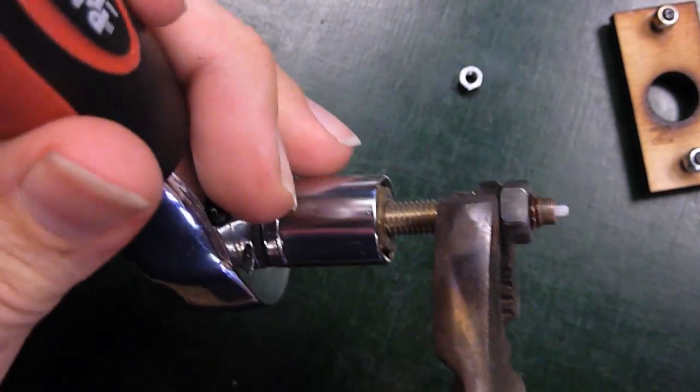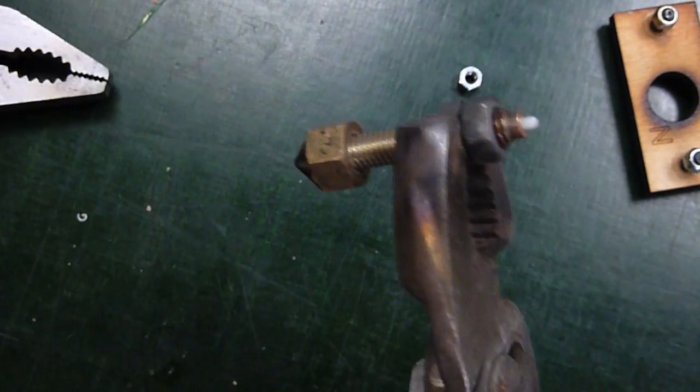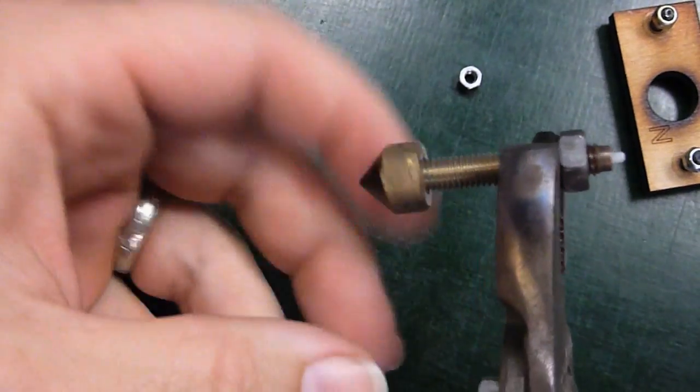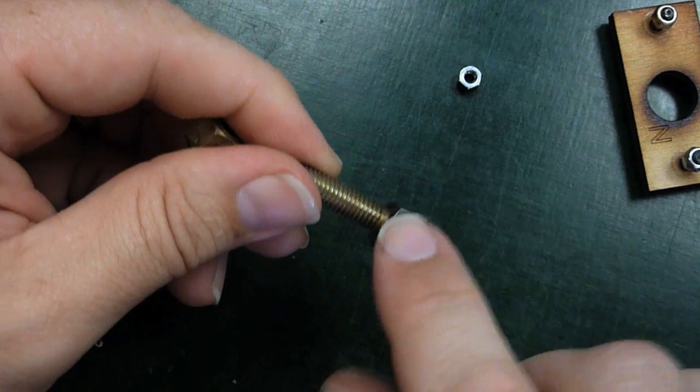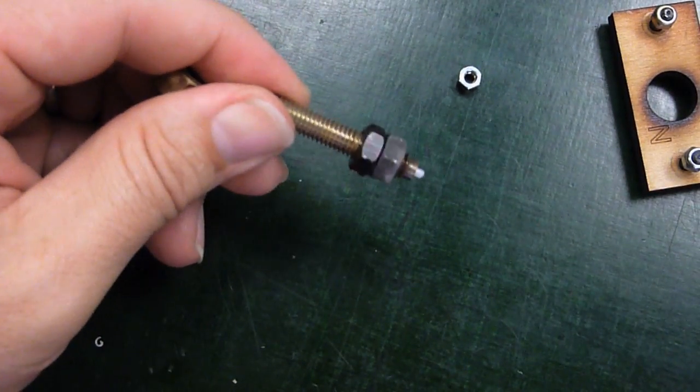I'll use the socket to unscrew the nozzle. Now I'll keep this on as I'll still be able to use it as a handle for cleaning out the filament.